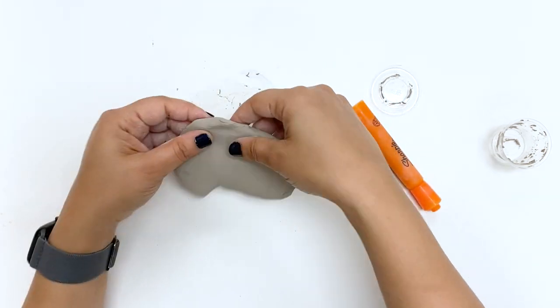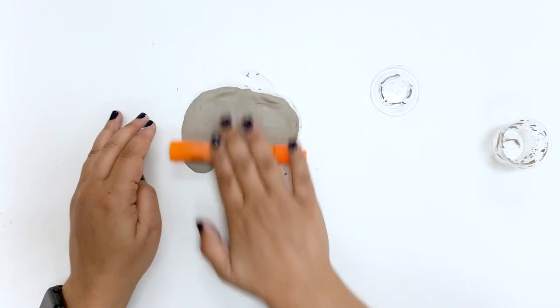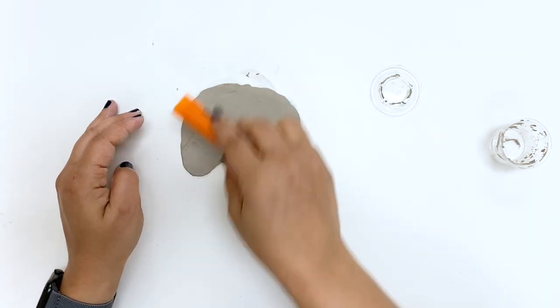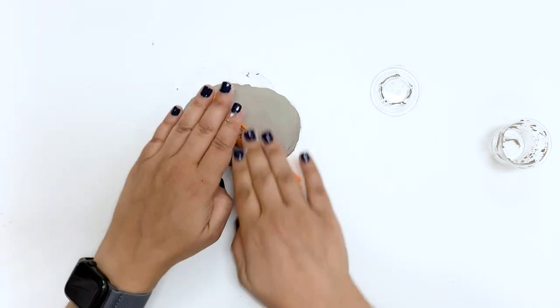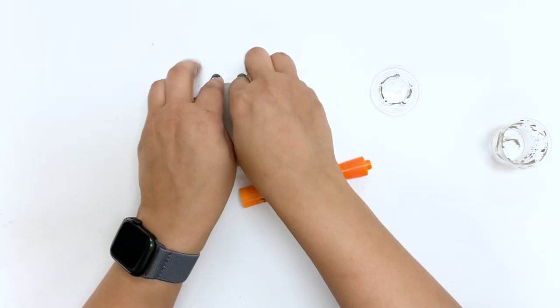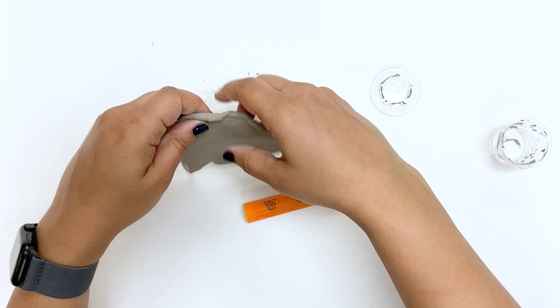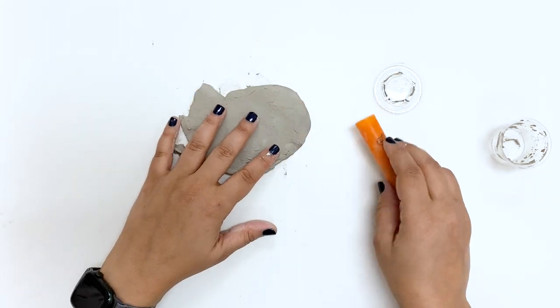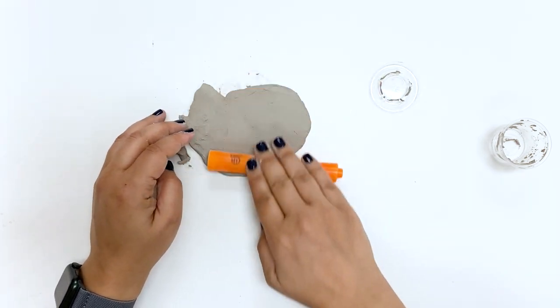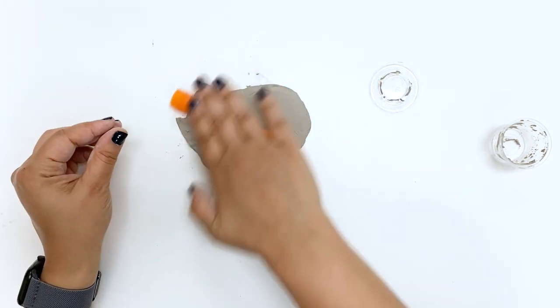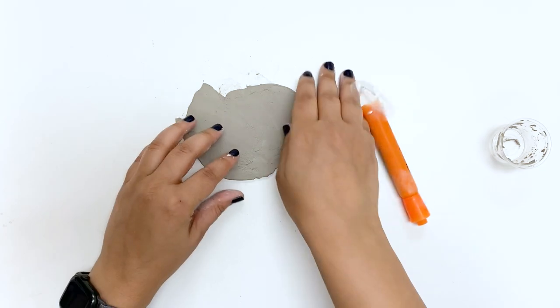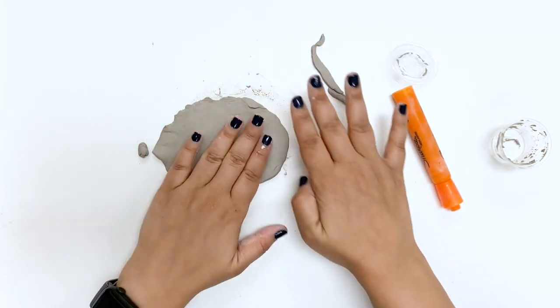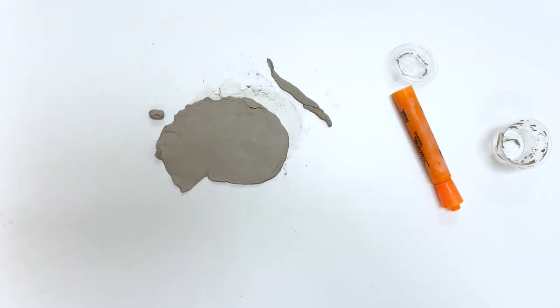While I do want my layer to be fairly thin, about a sixteenth of an inch and even, I'm not actually that worried about making sure it's smooth, in part because I think that a slightly rougher texture fits really well with the inspiration of Francesca's work. It's your piece, it's up to you how smooth or how rough you want it to be, but when it's thin and when it's even, you're good to go.